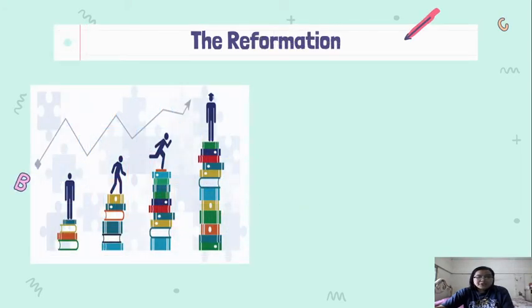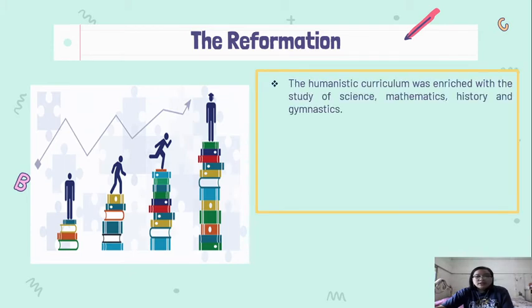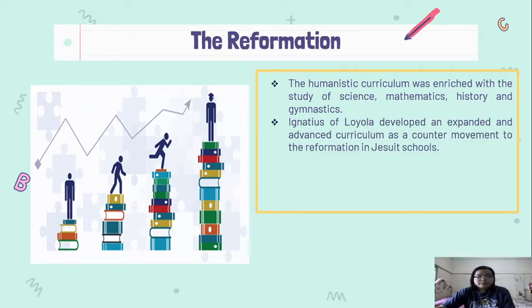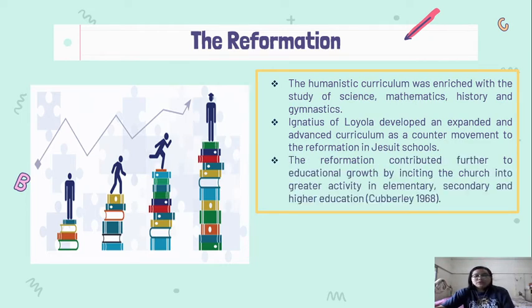During the Reformation, the humanistic curriculum was enriched with the study of science, mathematics, history, and gymnastics. Ignatius of Loyola, a Spanish priest, developed an advanced curriculum as a counter-movement to the Reformation in Jesuit schools. According to Cubberley (1968), the Reformation greatly contributed to educational growth by encouraging the church toward more activities at all levels — elementary, secondary, and higher education.